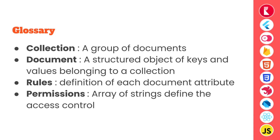First, any database comes with its own technical terms or jargons. In AppWrite database, a collection is simply a group of documents — if you have worked with a relational database, you can relate this to a table. A document is a structured object of keys and values that belongs to a particular collection, and in relational databases this is similar to a row in a table.